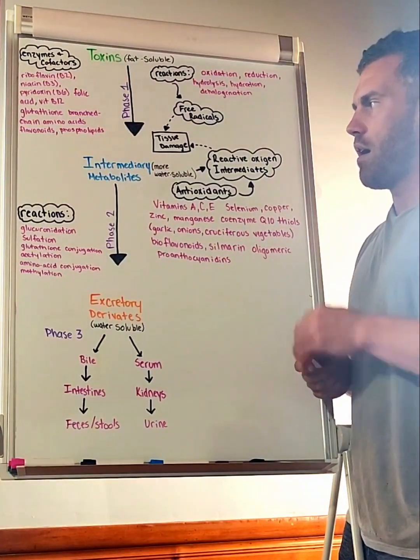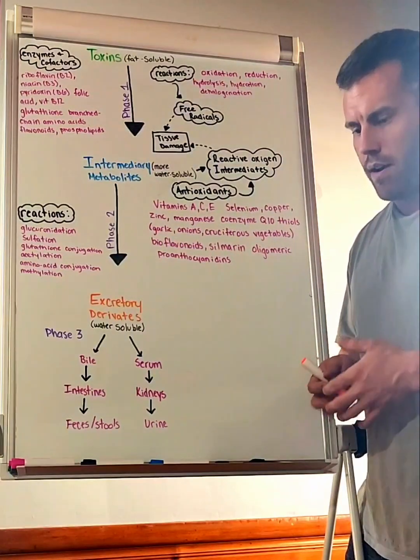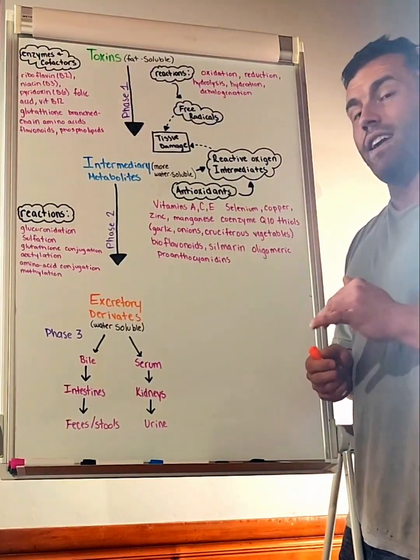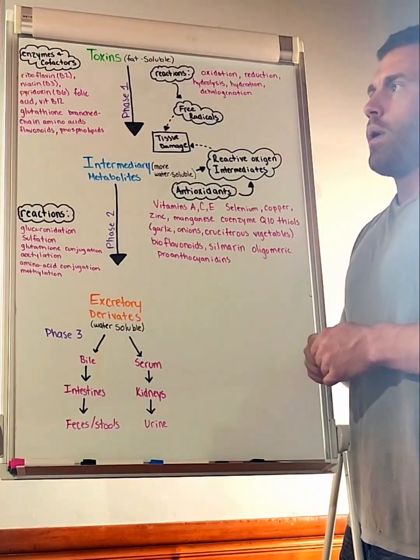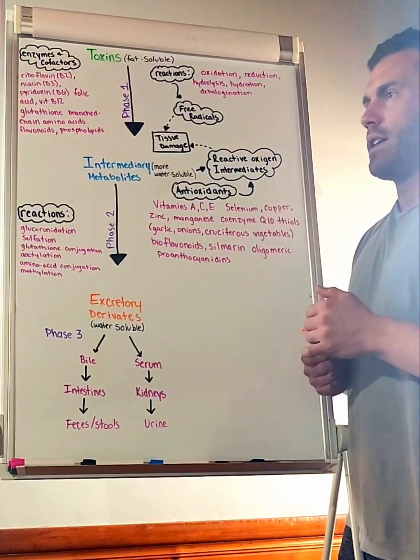Really important to note here is that if we don't have the enzymes, cofactors, vitamins, minerals, and things for phase one and phase one is slow, then we're going to have a discrepancy between the two phases where phase one is slow but phase two is moving normally.